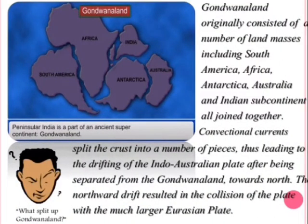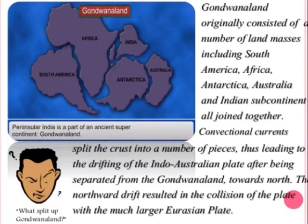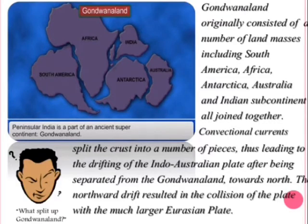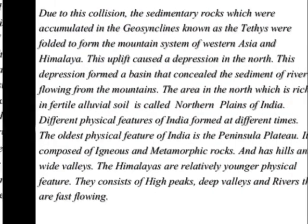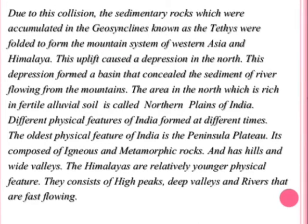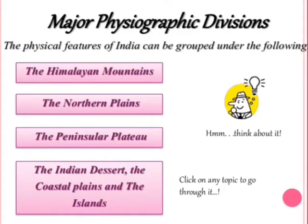Gondwana originally consisted of a number of land masses including South America, Africa, Antarctica, Australia, and the Indian subcontinent, all joined together. Convectional currents split the crust into pieces, leading to the drifting of the Indo-Australian plate northward after separating from Gondwana Land. This northward drift resulted in the collision of the plate with the much larger Eurasian plate — and that is why the Himalayas were formed. Today we will discuss the great Himalayas.